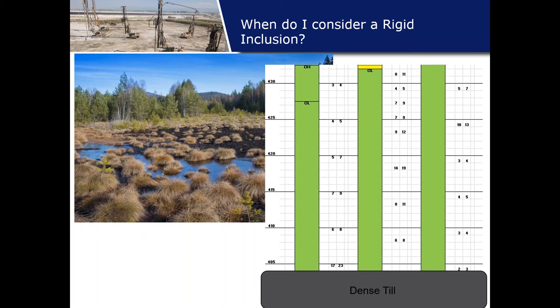If we're considering rammed aggregate piers in those organic materials, we have concerns: four-blow organic material doesn't have a good ability to confine a pier — it's going to compress if you load it up too much, leading to bulging, which is really uncontrolled settlement. Also, organics can decay over time, causing a loss of confinement on our pier and potentially unsuitable settlements. Since we have a really great bearing stratum below, it's probably better to just transfer the loads through those softer soils.